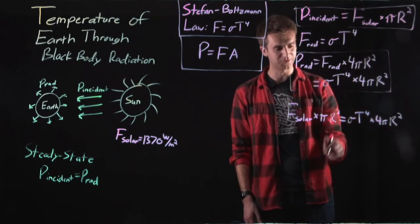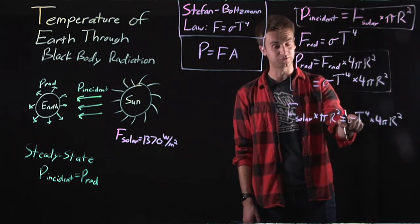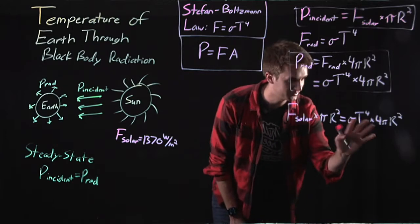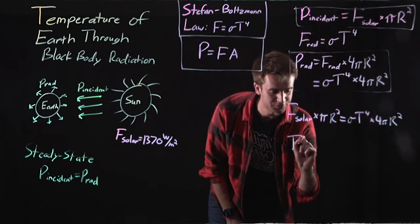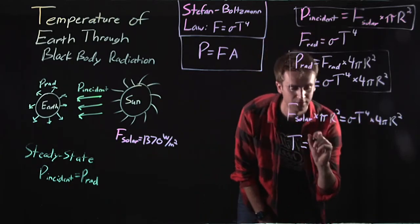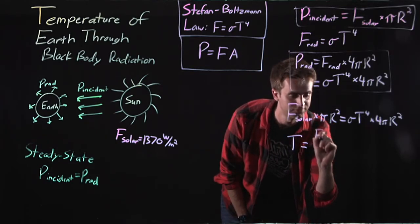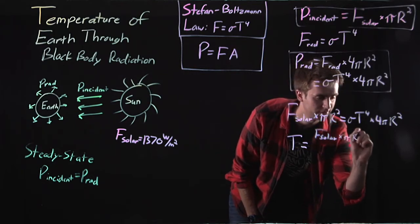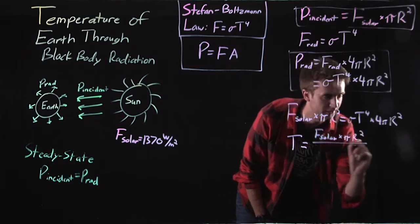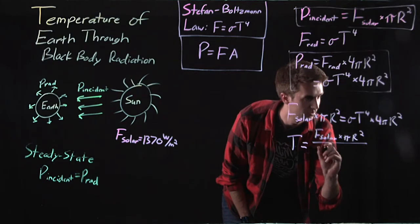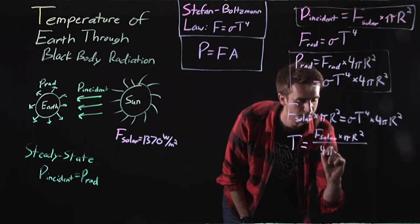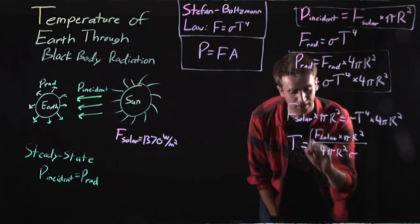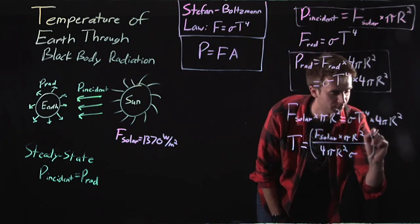All right, you can see where we're heading with this. We can rearrange this equation for temperature now. So once we do all the math, we get that temperature must be equal to F solar times pi r squared divided by 4 pi r squared sigma, and that is to the one-fourth power.